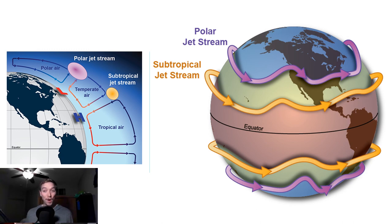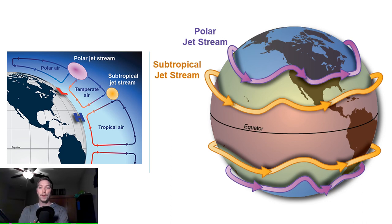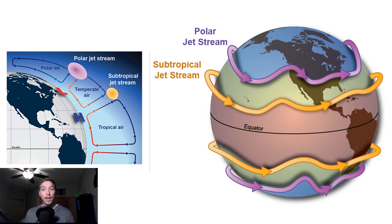Jet streams also follow the sun: as the sun's elevation increases each day in spring, the average latitude of the jet stream shifts poleward. By summer in the Northern Hemisphere, it's typically found near the US-Canada border. As autumn approaches, the sun's elevation decreases and the jet stream's average latitude moves back toward the equator.